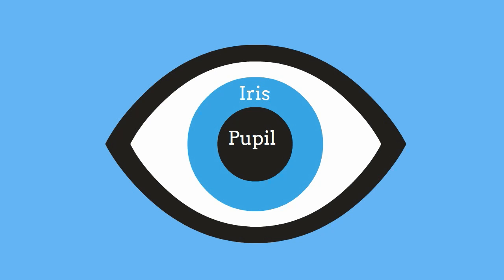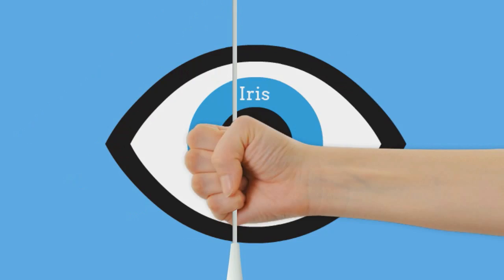The iris is a circular structure that surrounds the pupil and regulates the amount of light entering the eye. Your iris also gives the eye its color.